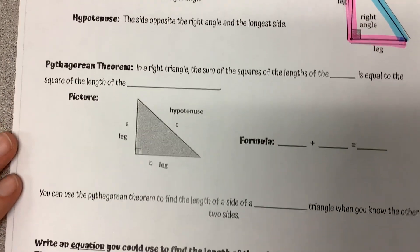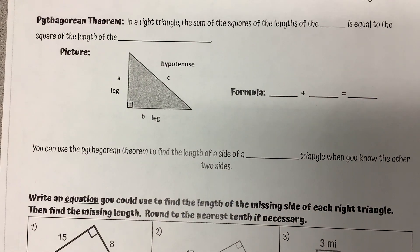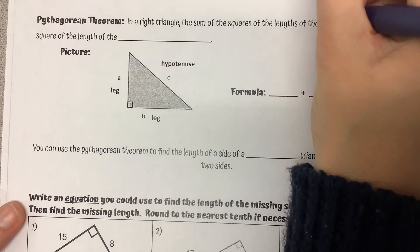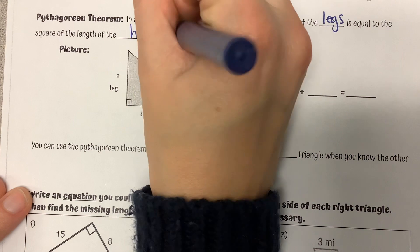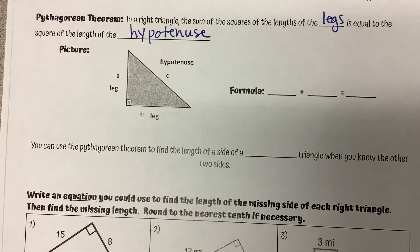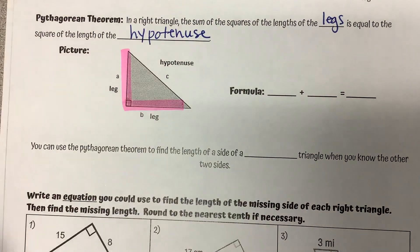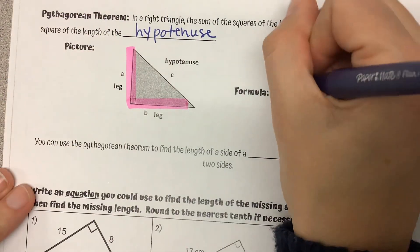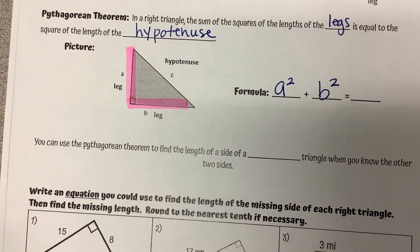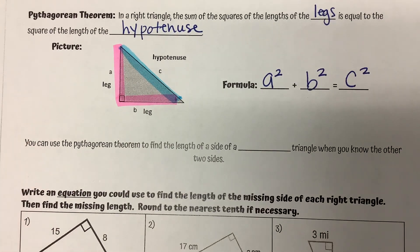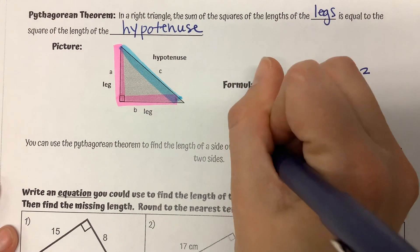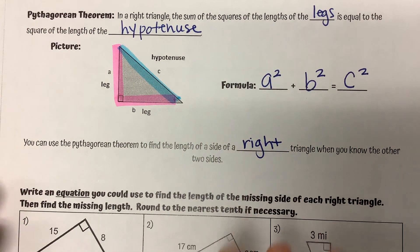In a right triangle, the sum of the squares of the lengths of the legs is equal to the square of the length of the hypotenuse. If we square leg A and add the square of leg B, that should equal the square of the hypotenuse C. So you can use the Pythagorean Theorem to find the length of a side of a right triangle using that formula: A squared plus B squared equals C squared.